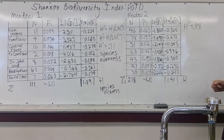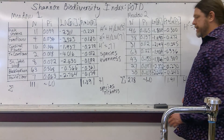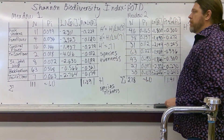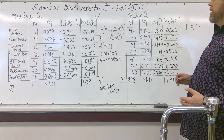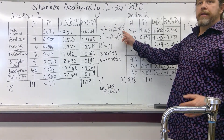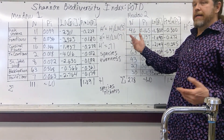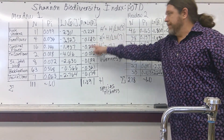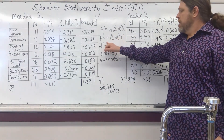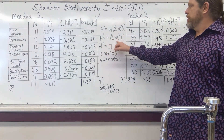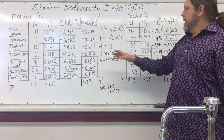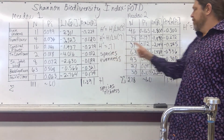Onward to evenness. This is where we take our richness score and divide it by the logarithm of the number of populations studied. The number of populations is S. In our case, we have seven species, so we have seven populations—meaning we divide our species richness score by the natural log of 7.